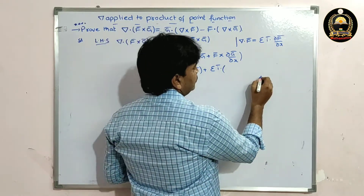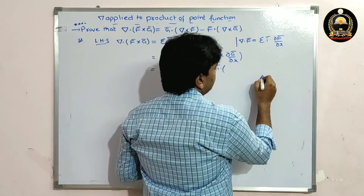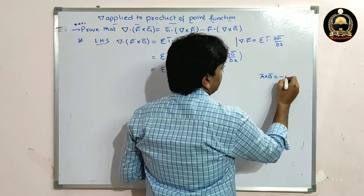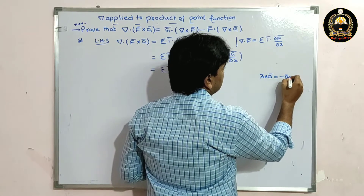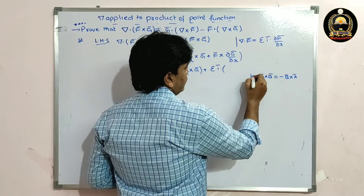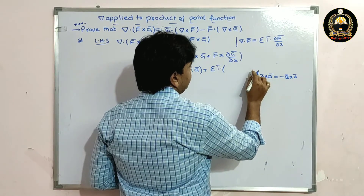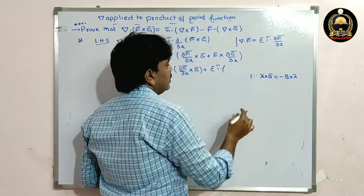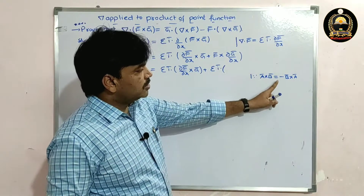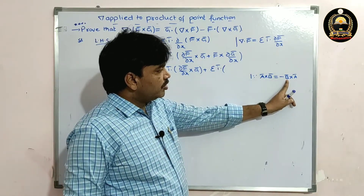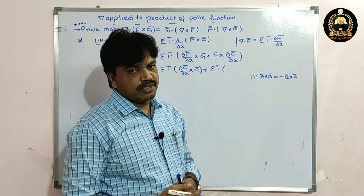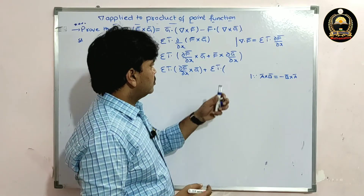Now students, we know the property that a-bar cross b-bar is equal to minus b-bar cross a-bar. That is, a-bar cross b-bar equals minus b-bar cross a-bar.